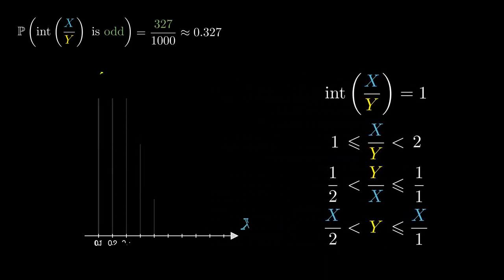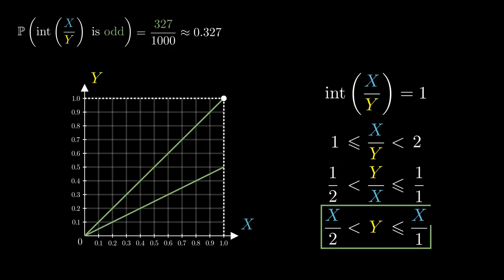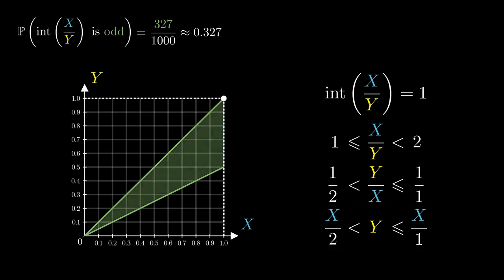We can plot this on the xy plane. This means that we can draw a line passing through the origin with gradient 1, as well as the line passing through the origin with the gradient half. This inequality tells us that we accept the pairs of x's and y's that lie inside this triangle.